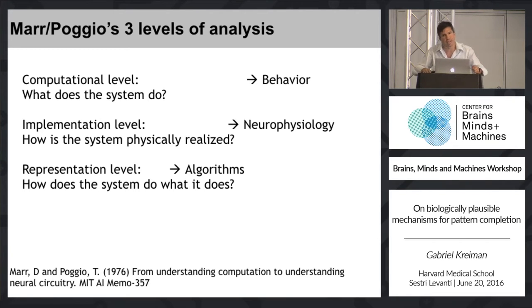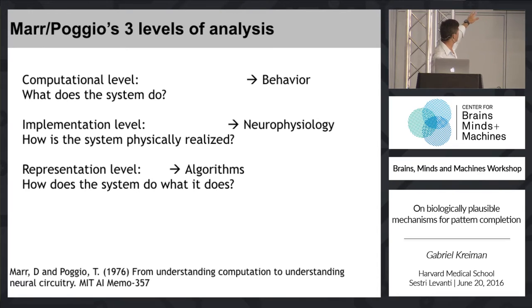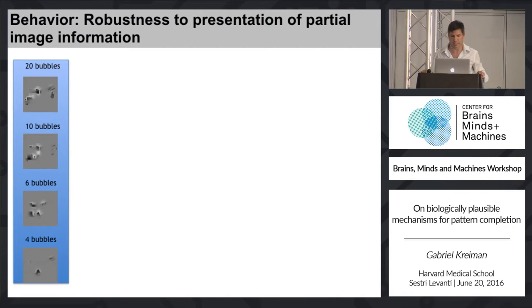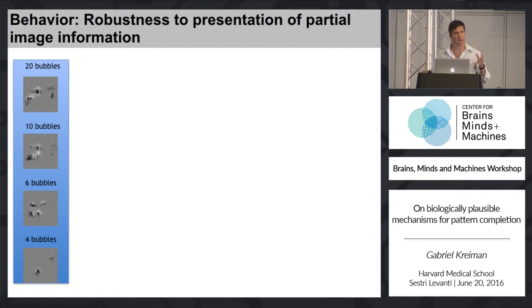I'd like to ask how pattern completion works at three different levels. Let me start with behavior and show you some data to convey the notion that humans are extremely good at pattern completion and being able to make inferences about objects from very small amounts of minimal information.